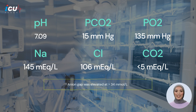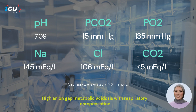The total CO2 level was less than 5 mMol/L, and the calculated anion gap was more than 34 mMol/L. Based on these results, it is apparent that the patient is experiencing metabolic acidosis due to a high anion gap, with respiratory compensation.